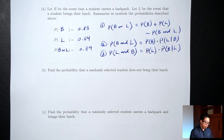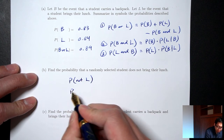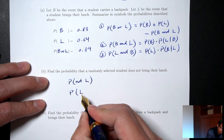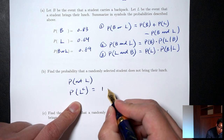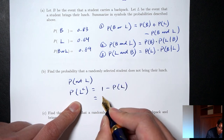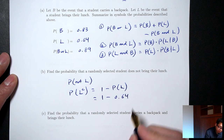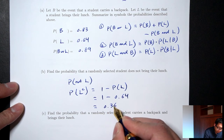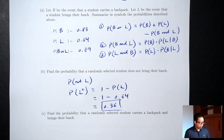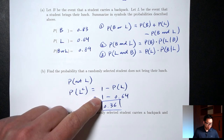Part B: probability that a randomly selected student does not bring their lunch — that's the complement of L. P(L complement) = 1 − P(L) = 1 − 0.64 = 0.36.